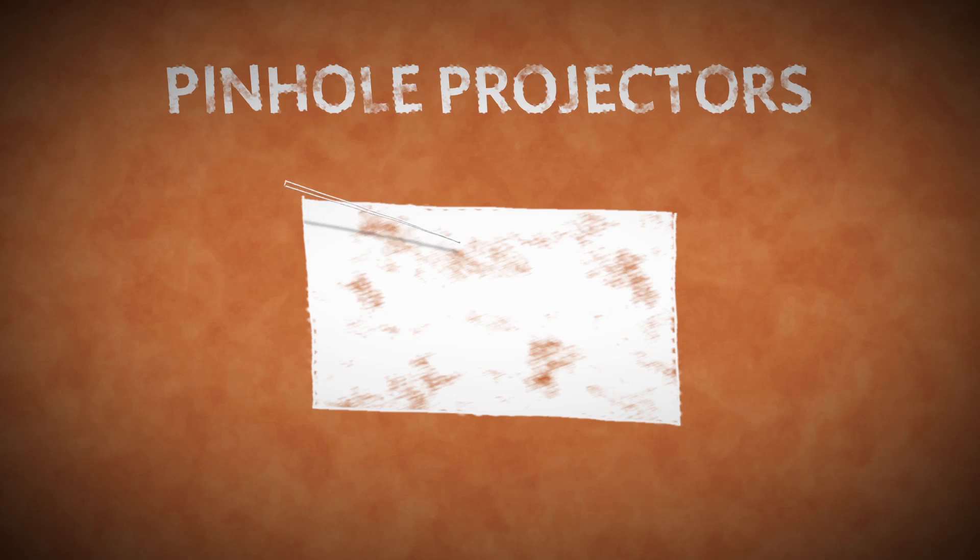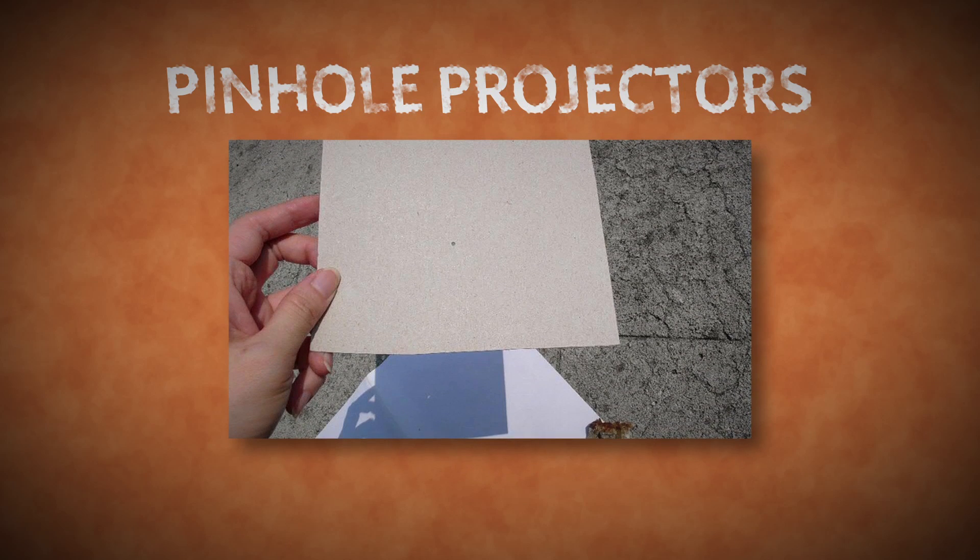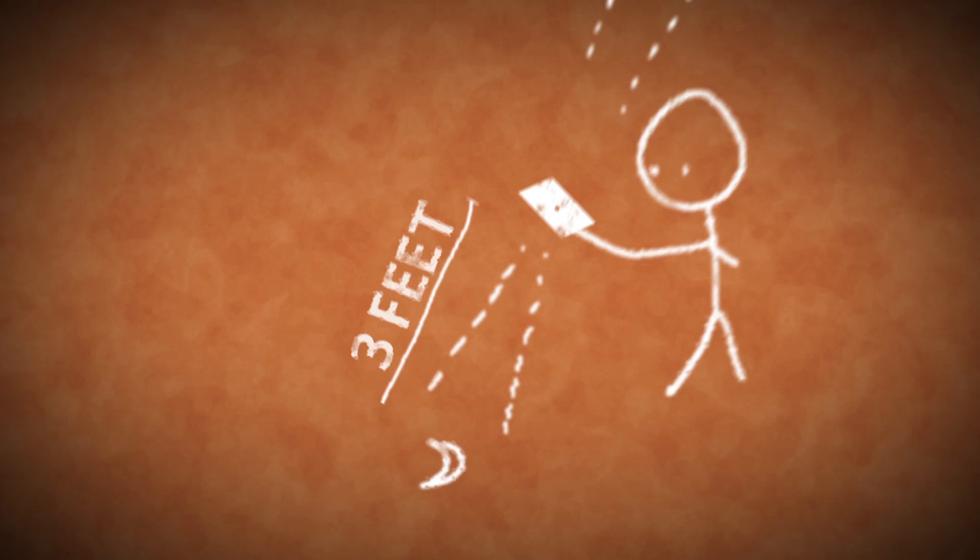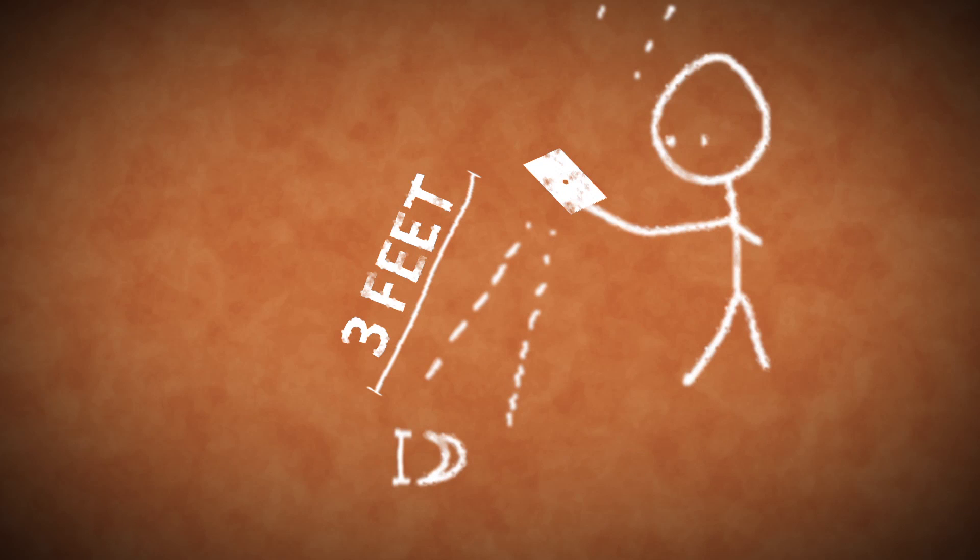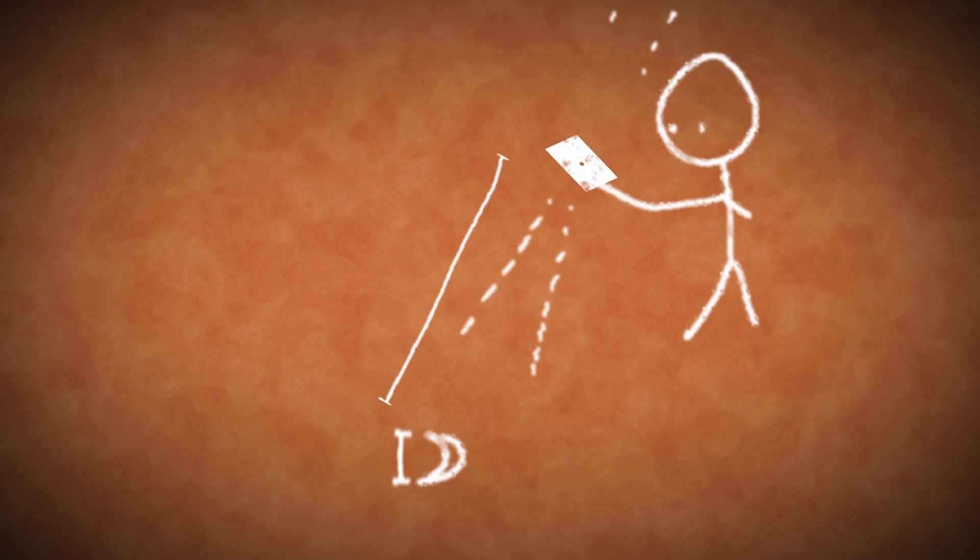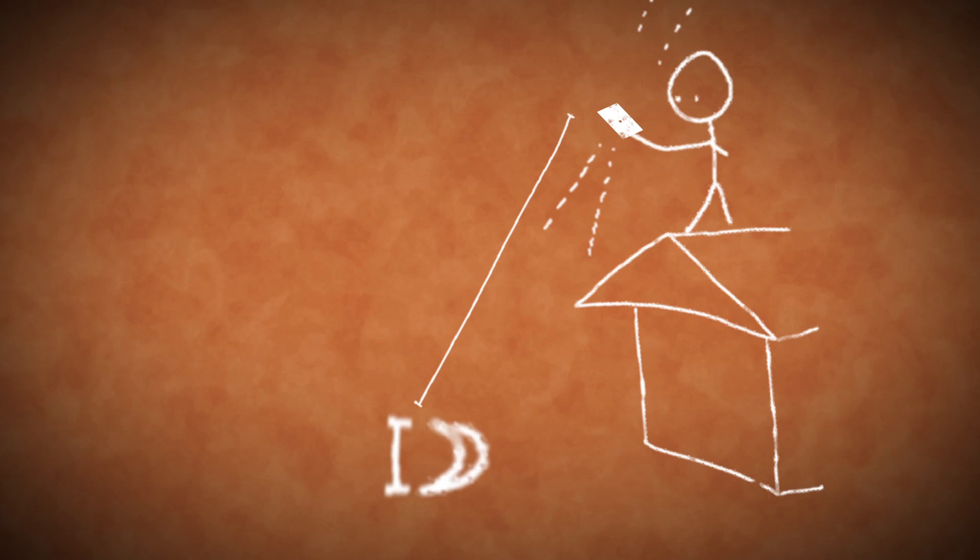Pinhole projectors work well for deep partial eclipses. Poke a round pinhole through a piece of stiff paper or cardstock, and let the sun's light shine through it onto a shaded surface, and you'll see a tiny image of the sun. If you're projecting about three feet, the image of the sun will be about a half inch in diameter. And again, the greater the projection distance, the larger the image.